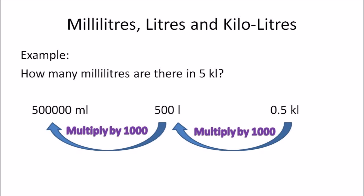How many milliliters are there in 0.5 kiloliters? Similar to the earlier example, you need to convert kiloliters to liters and then liters to milliliters. So 0.5 multiplied by 1000 gives you 500 liters, and then 500 liters multiplied by 1000 gives you 500,000 milliliters.